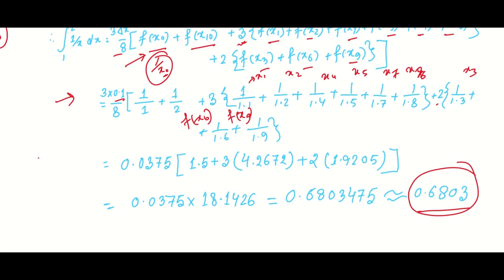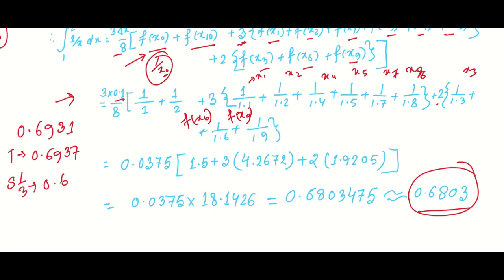The analytical method of numerical integration gives 0.6931. The numerical integration result we computed gives 0.6937. Simpson's 1 by 3 rule gives 0.6932. Simpson's 3 by 8 rule gives 0.6803. This is the Simpson's 3 by 8 method to calculate numerical integration.